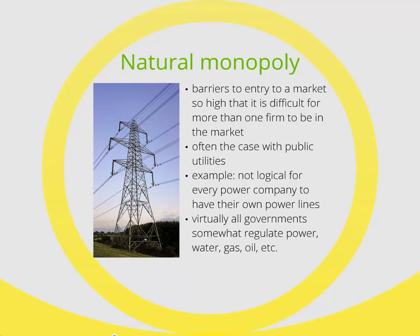This is often the case with public utilities. Take the power company, for example. To get power to people, the power company needs to build very expensive plants and a really expensive distribution system in the form of big power lines. This means it is incredibly expensive to enter the market and that's why there is typically only one power company. To keep power companies and other utilities from making off with all the people's money, almost all governments regulate public utilities to some extent.